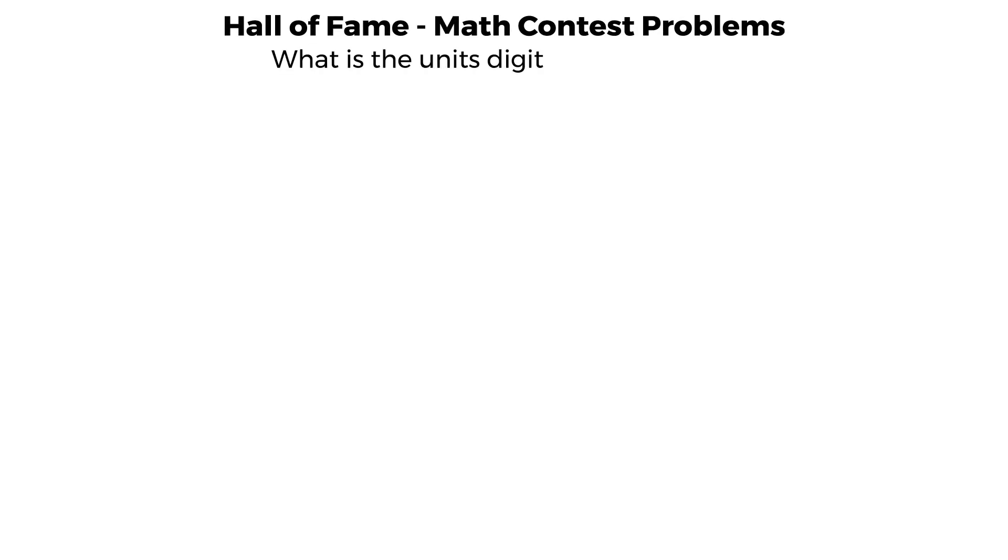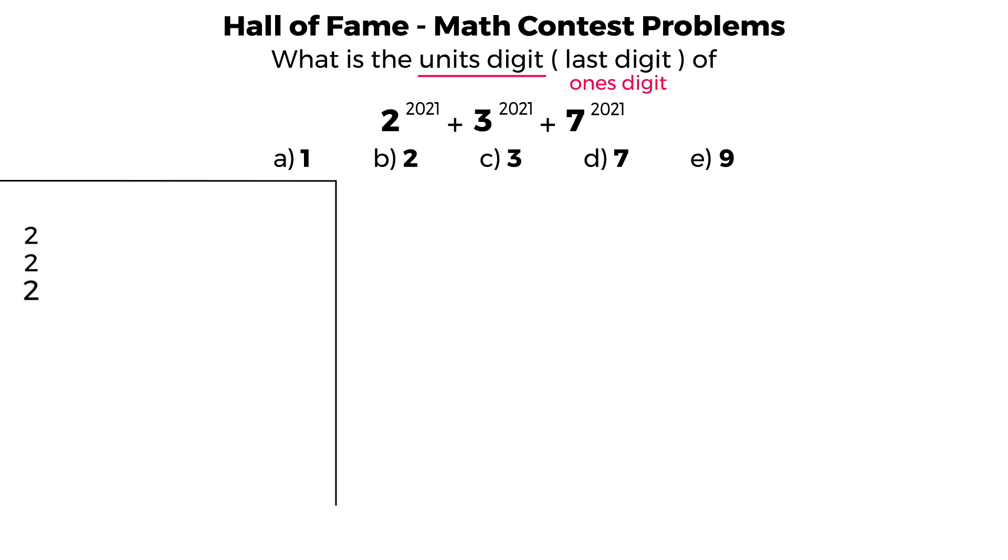What is the units digit, last digit, of 2 to the power of 2021 plus 3 to the power of 2021 plus 7 to the power of 2021? In this video, I'm going to explore a very popular topic on math contests, and that is known as the units digit, sometimes known as the last digit and sometimes referred to as the ones digit. And what you do in these kinds of questions is you look for a pattern. You write down some of the first few powers of any number and see what the units digits are and if there is indeed some sort of a repeating pattern.